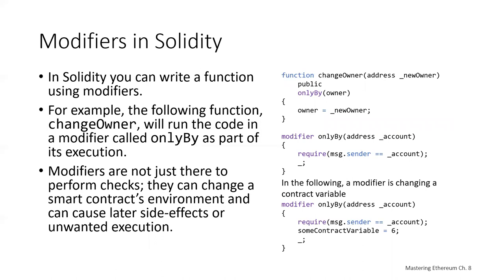Let's look at some of the features Viper omits. In Solidity, you can write a function using modifiers. For example, consider a function called change_owner which receives an argument named new_owner of data type address — an Ethereum address — and is a public function. It uses a modifier called only_by_owner, and in the body of the function we set who the new owner is.